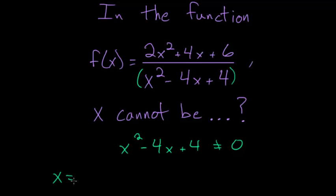So x equals the minus coefficient on the x term, so 4, plus or minus square root of this coefficient squared, so minus 4 squared which is 16, minus 4 times the coefficient on x squared which is 1, times this constant term which is 4.